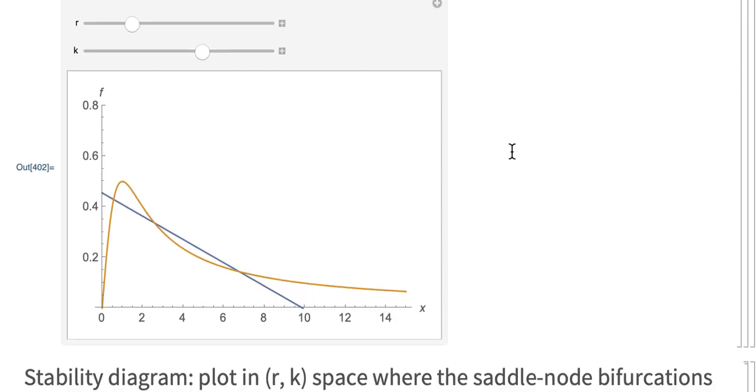So a stability diagram is a plot in R K space. And the diagram shows us where the saddle node bifurcations occur. Because on one side of the saddle node bifurcations, I have one fixed point. And on the other side of the saddle node bifurcation, I have three.